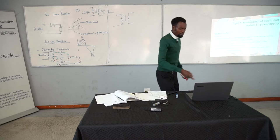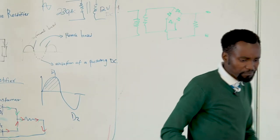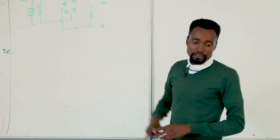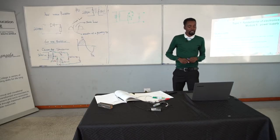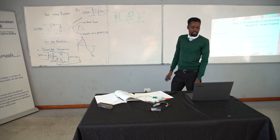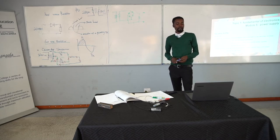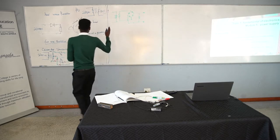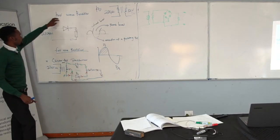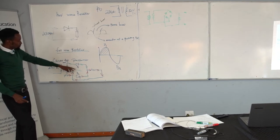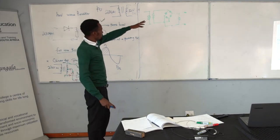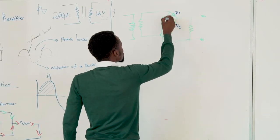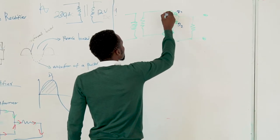Now we have the bridge rectifier. A bridge rectifier is an AC to DC converter that rectifies the main AC input to DC output, and we use four diodes. Comparing: half wave uses one diode, center tap uses two diodes, and bridge rectifier uses four diodes — D1, D2, D3, and D4.